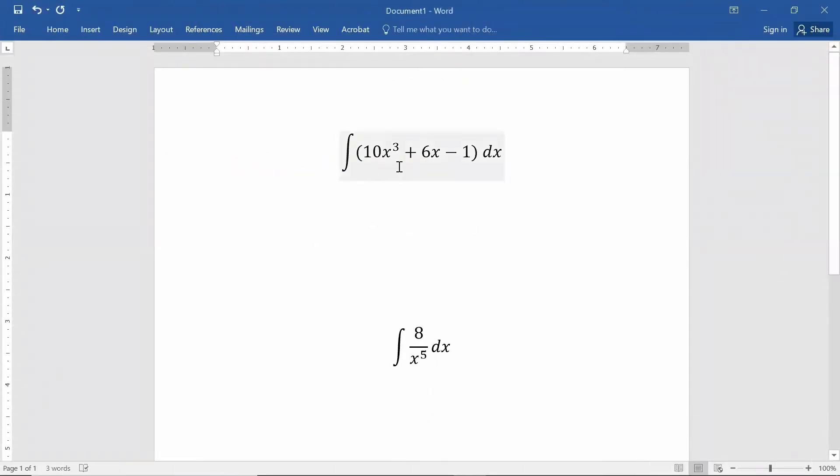In this first one, I don't need to rewrite it; it's pretty easy to deal with. For that first term, I'd raise the x³ to an x⁴, and then I would take the coefficient of 10 and divide by 4.